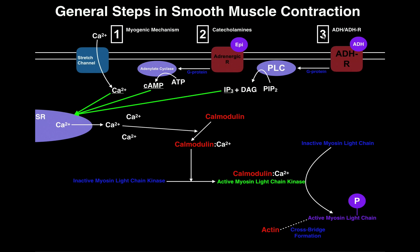The first method by which we can induce smooth muscle contraction is through what's called a stretch channel. Blood vessels have this intrinsic property where they maintain blood pressure through the vessel. If a significant amount of blood goes through a vessel, that will cause the blood vessel walls to stretch. To keep blood pressure more or less constant, the smooth muscle will contract to shrink the blood vessel back down — it's sort of a negative feedback system.